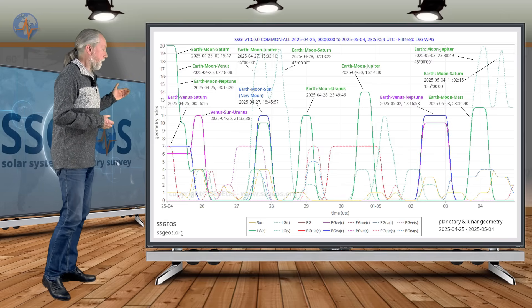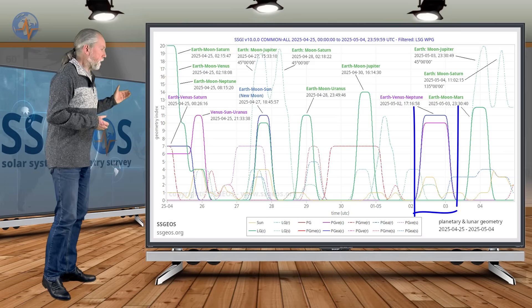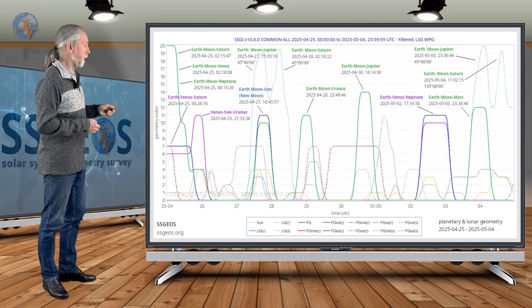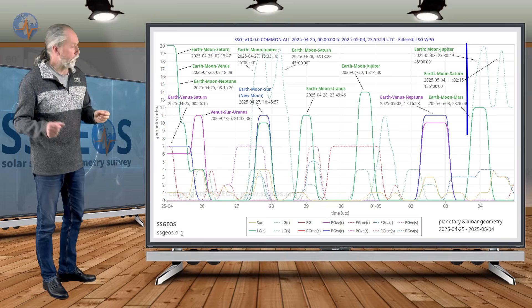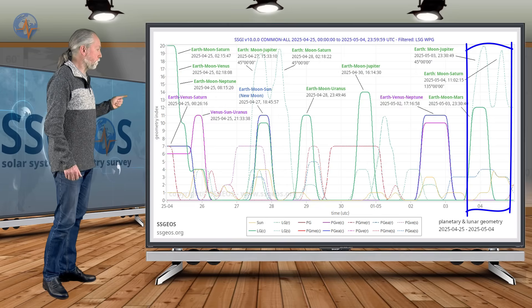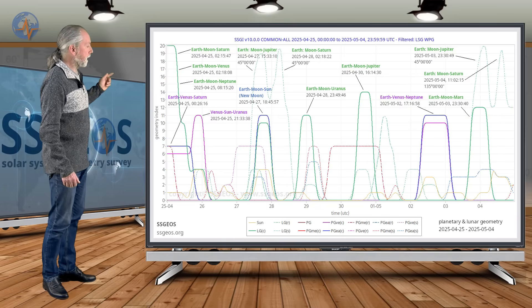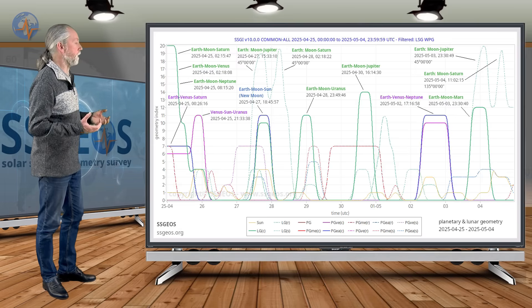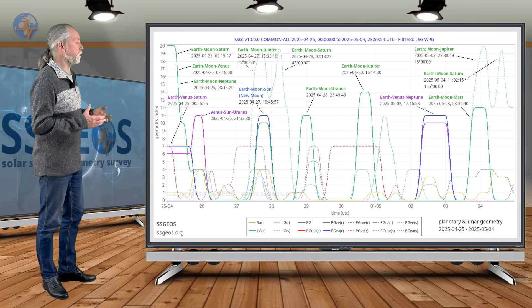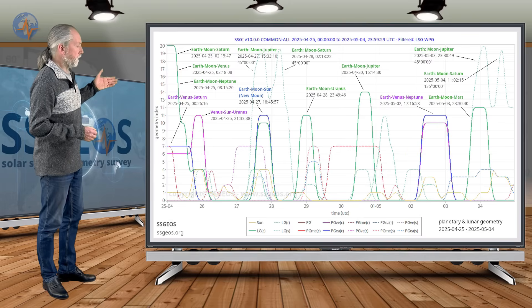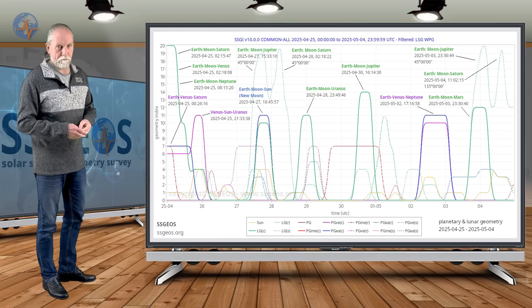And then we have Earth, Venus and Neptune on the 2nd of May. And that will be followed by, again, a convergence of lunar geometry on the 4th. And we see Earth, Moon, Mars in a conjunction. And we see again Jupiter and Saturn with semi-right angle geometry 45 and 135 degrees. And that could result in some clustering of stronger earthquakes on the 5th, 6th of May.